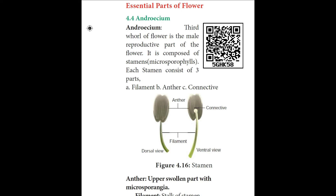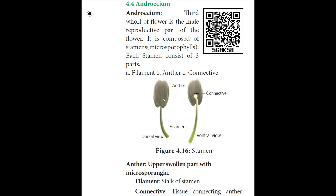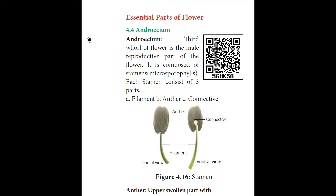Androecium is the third whorl of the flower and is the male reproductive organ. It is composed of stamens (microsporophylls). Each stamen consists of three parts: filament (the stalk), anther (the upper swollen part with microsporangia), and connective tissue (connecting anther to filament). The anther typically contains two compartments called thecae — each theca consists of two microsporangia, and these two microsporangia fuse to form a locule.